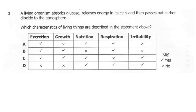Question 1. All living organisms absorb glucose, release energy in its cells, and then pass out carbon dioxide to the atmosphere. Which characteristics of living things are described in the statement above? A: excretion, nutrition, respiration.